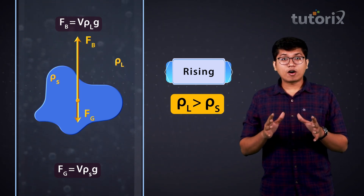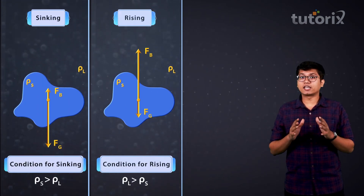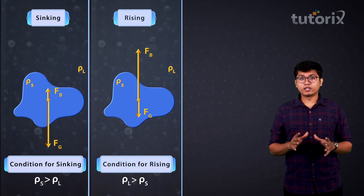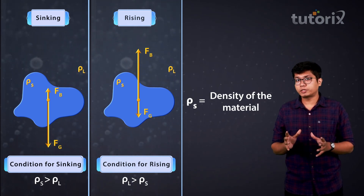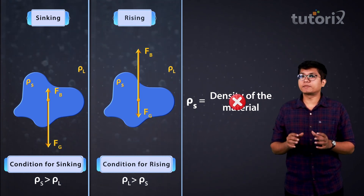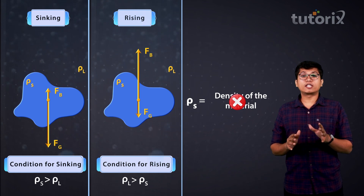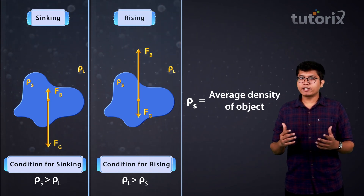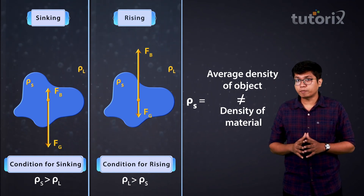So we now have both conditions for sinking as well as for rising up. An important point to note here is that whenever I'm referring to the density of the object, it doesn't necessarily mean the density of the material that it's made out of, because we are only looking for the average density. And the average density may be different from the density of the material the object is made up of.